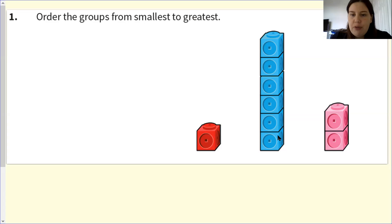Let's find out. So if we look at the block of blue, we have one, two, three, four, five, six. And if we look at the pink, we only have one, two. So that means it would go next to the red. And then the greatest amount is the blue.